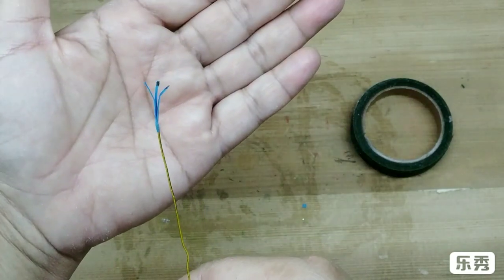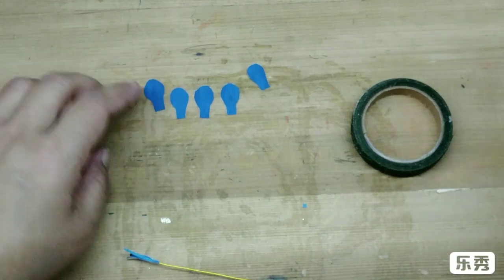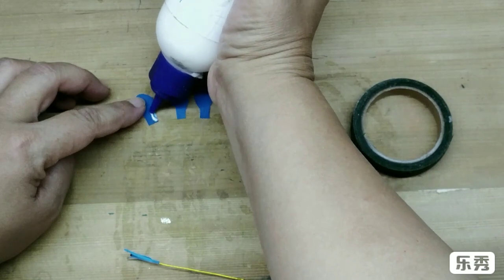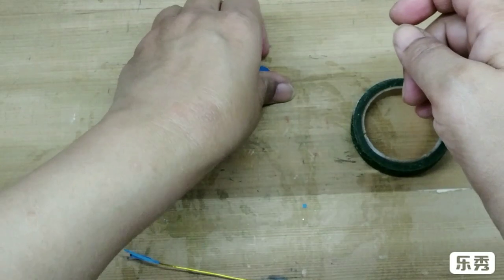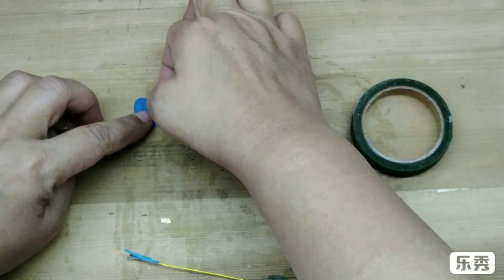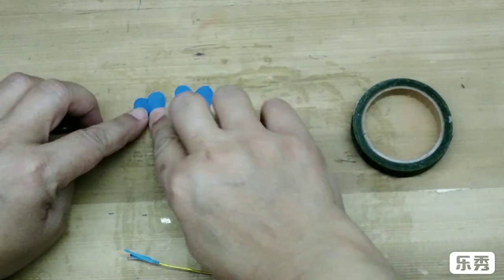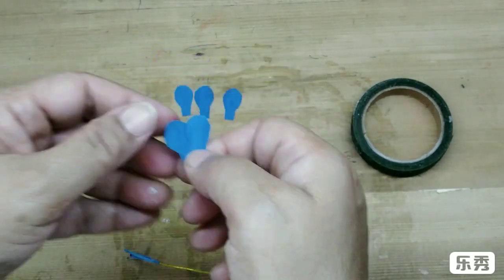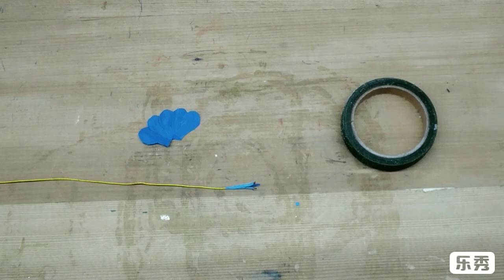It'll look like this. Now take these petals and just apply glue on the base and the side a bit, and stick the next one on it at an angle. Similarly I'll stick the others.